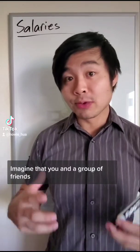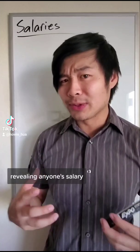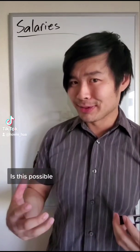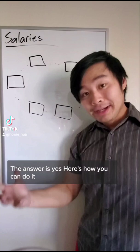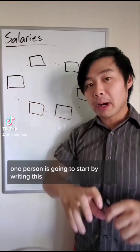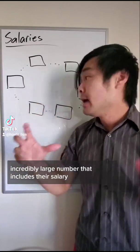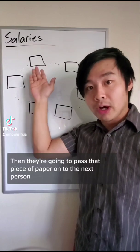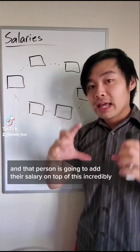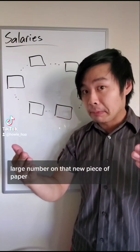Imagine that you and a group of friends want to find the average of all of your salaries without actually revealing anyone's salary. Is this possible? The answer is yes. Here's how you can do it. Each person is going to have a piece of paper and a pencil. One person is going to start by writing this incredibly large number that includes their salary. Then they're going to pass that piece of paper on to the next person and that person is going to add their salary on top of this incredibly large number on that new piece of paper.